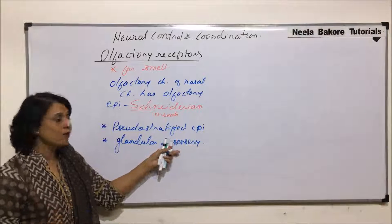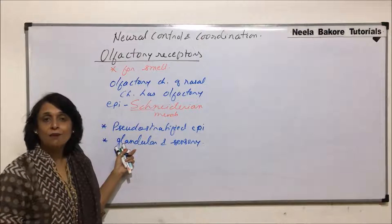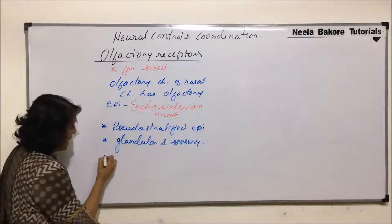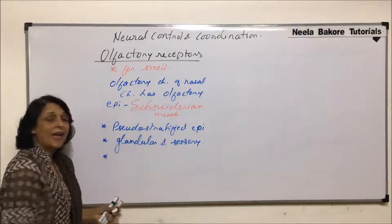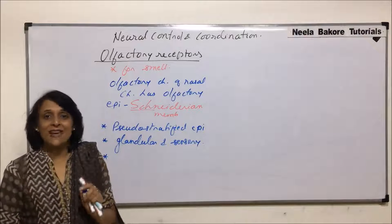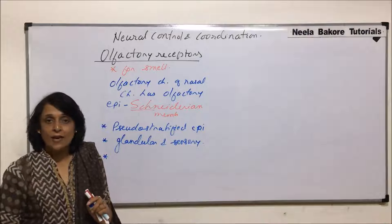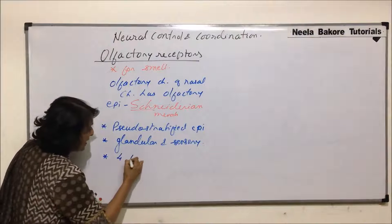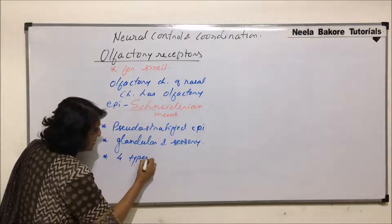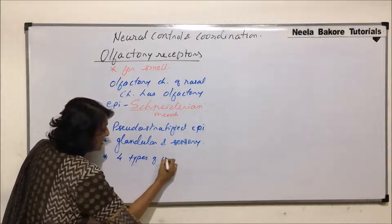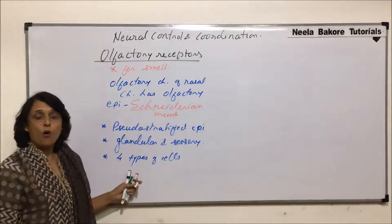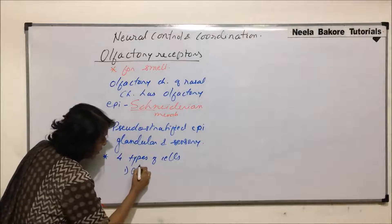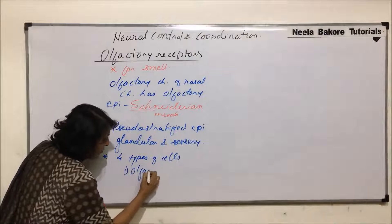The epithelium is glandular and sensory — sensory because it perceives the stimulus, and glandular because it secretes mucus. The epithelium has four different types of cells. The first are called olfactory cells.